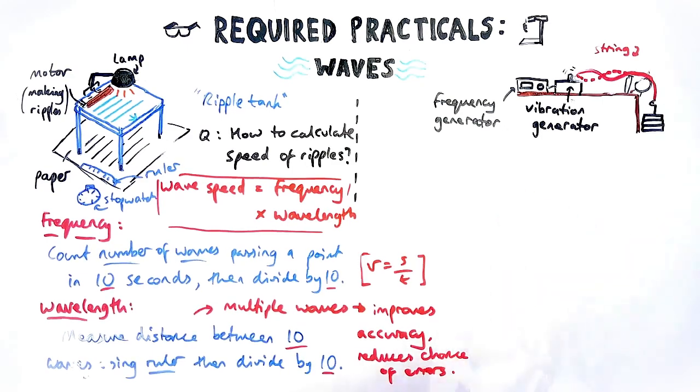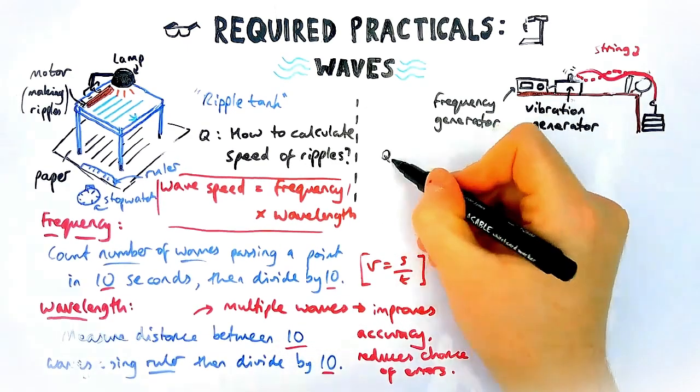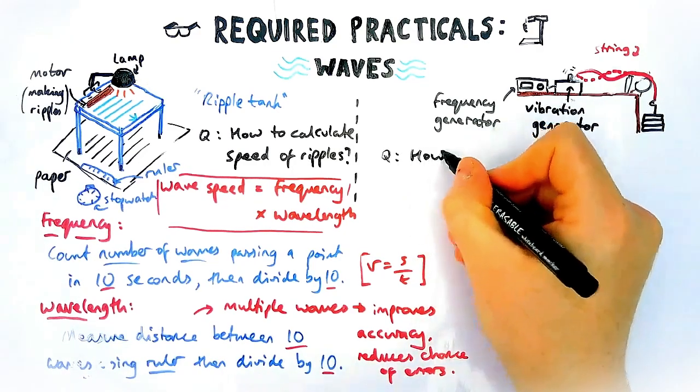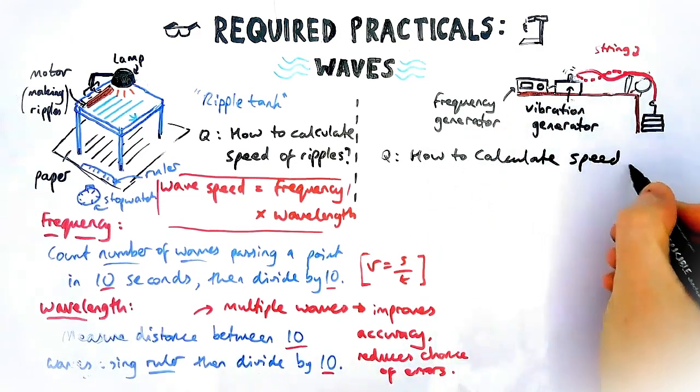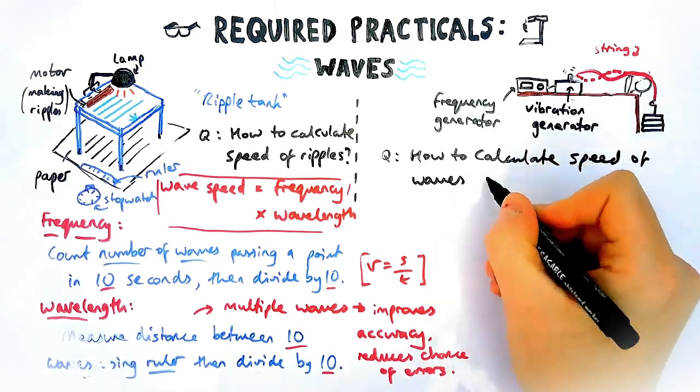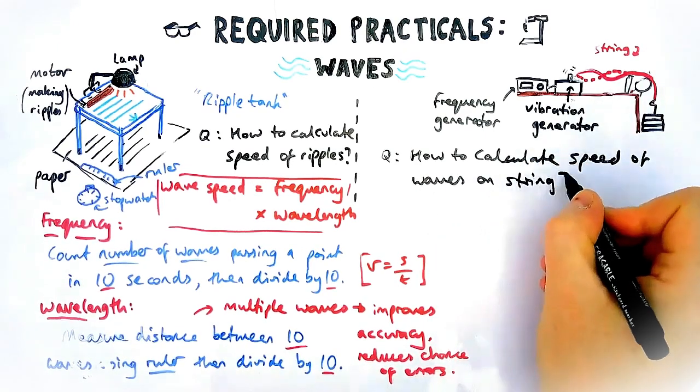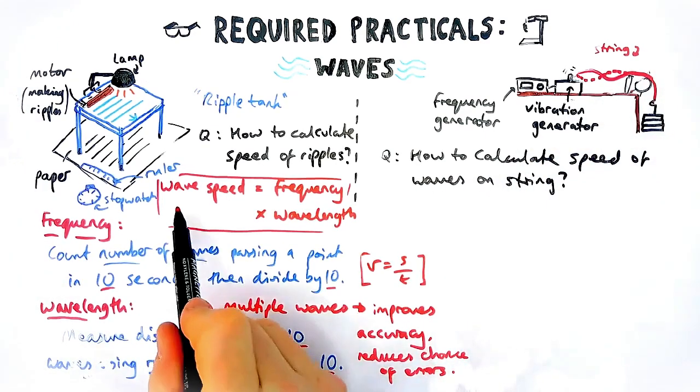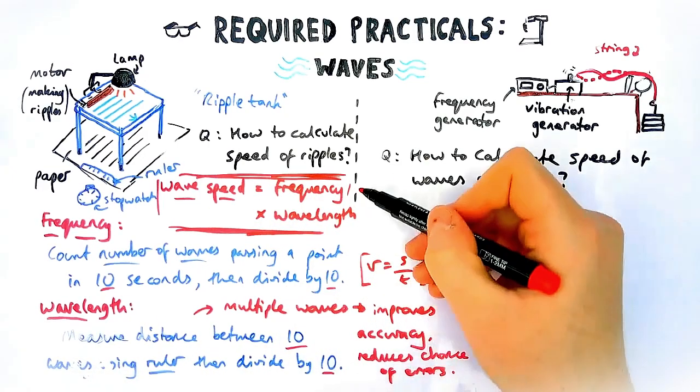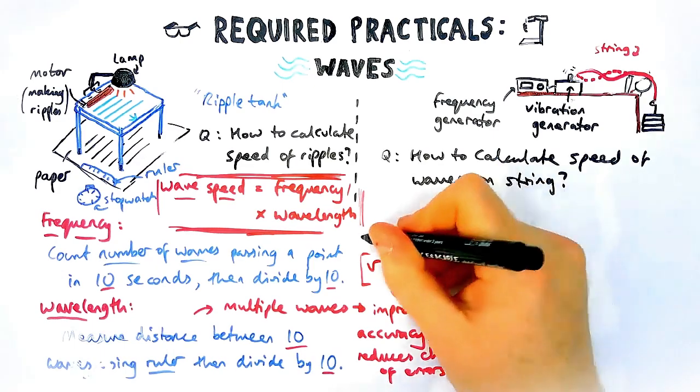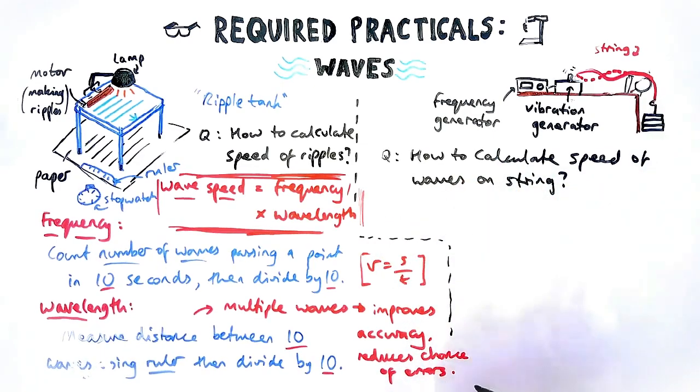While this looks like a complicated setup, and it is kind of an A-level prac, it is easier than the ripple tank in lots of ways. You get a similar question, something like: how do you calculate the speed of waves on the piece of string? It's a similar answer to start off with. We're going to use the equation wave speed equals frequency times wavelength. But how do we know what the frequency and what the wavelengths are? So let's do them one at a time again and see if we can spot any similarities.